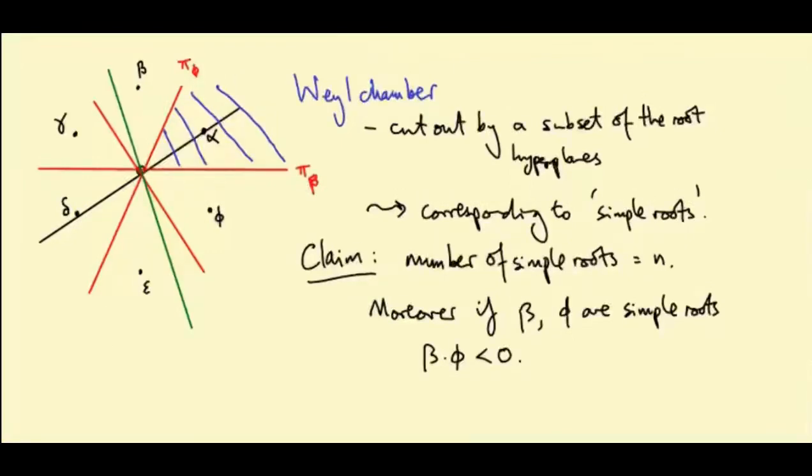So I want to think of the boundary of the Weyl chamber, so these two red rays, π_beta and π_phi, as mirrors.